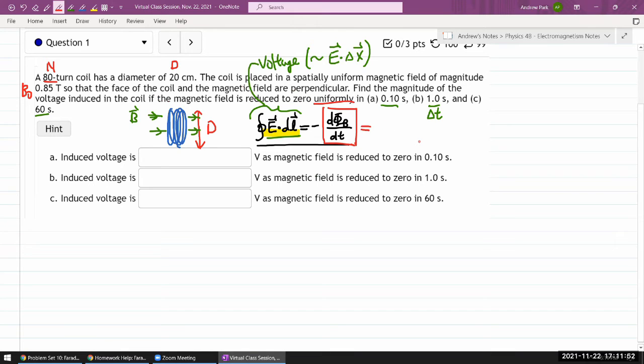Because then I can say, instead of instantaneous rate of magnetic flux change, I can calculate the total change of magnetic flux divided by the total time that we have. And because you are reducing the magnetic field to zero, the total change of magnetic flux will just be your magnetic flux at the beginning. I mean, there's some sign issue, so absolute value. So within the absolute value, whatever magnetic flux you have at the beginning, that's going to be your change as you reduce the magnetic field to zero.